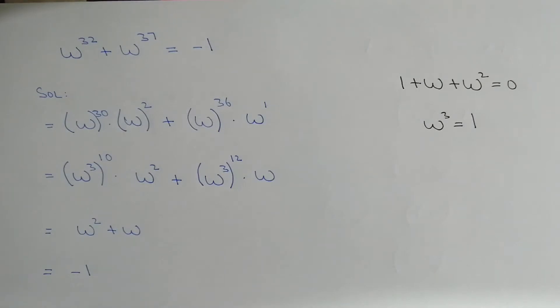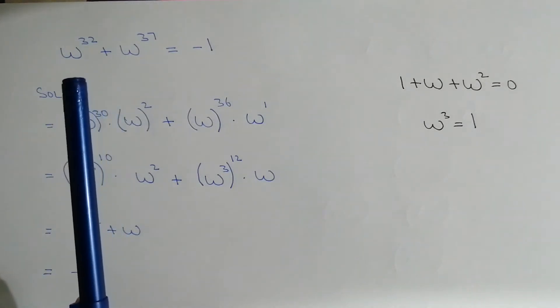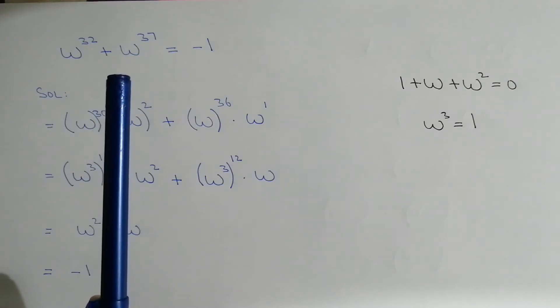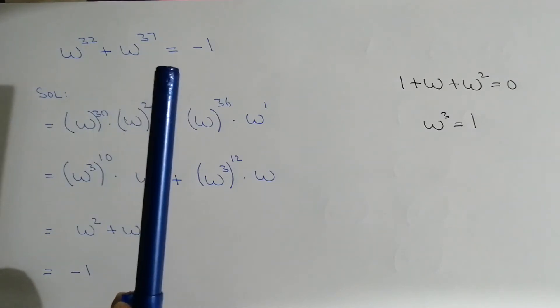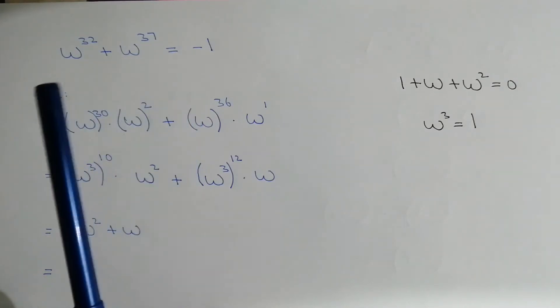Hello, what's up guys, welcome to the new video. Here we have the problem: omega power 32 plus omega power 37 is equal to minus 1.